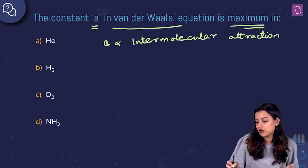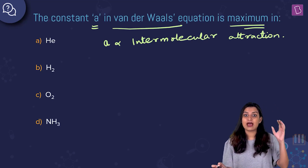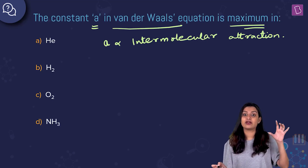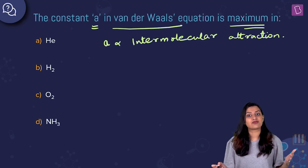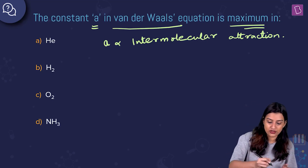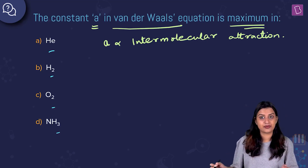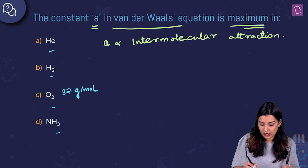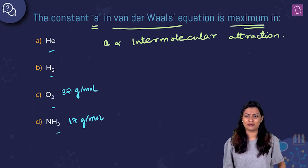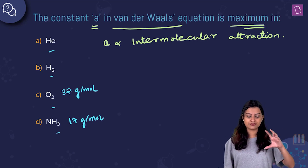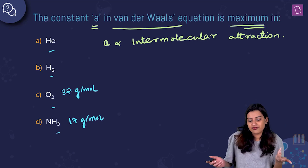As molar mass increases, intermolecular attraction increases because van der Waals forces increase. Among the given gases, helium is 4 g/mol and hydrogen is 2 g/mol — very light gases. Oxygen has a molar mass of 16 g/mol and ammonia is 17 g/mol, so the comparison narrows down to oxygen versus ammonia.